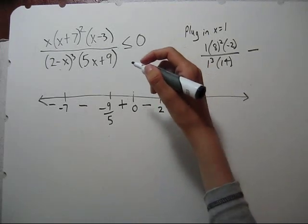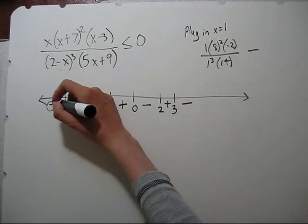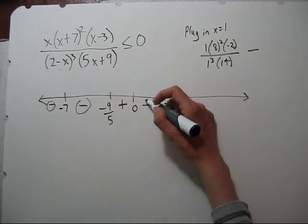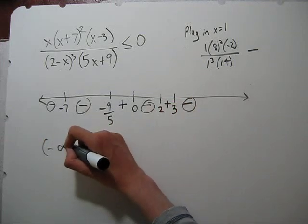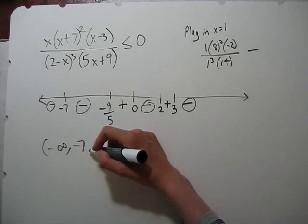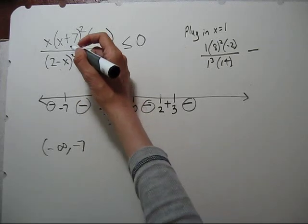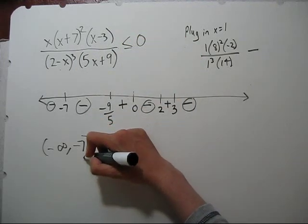Now our question asked for less than or equal to zero. So we want our negatives. So we'll have negative infinity to negative seven. Now let's think about if we want a closed bracket or open. Negative seven makes the numerator zero, which makes the whole thing zero. So we can include that.